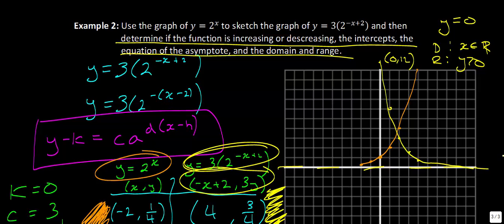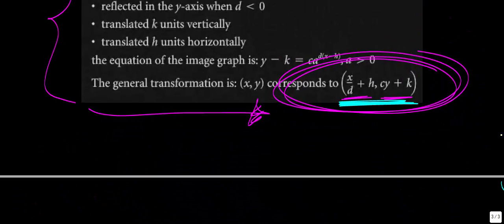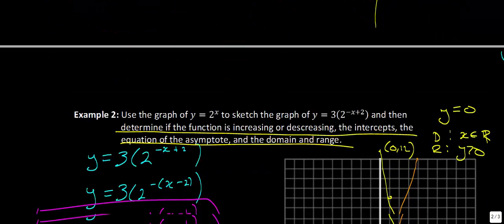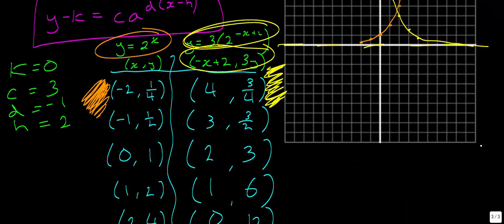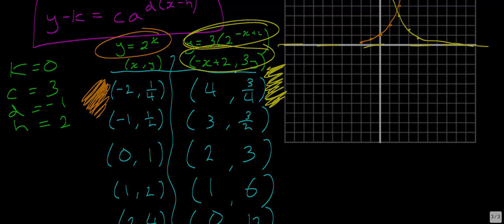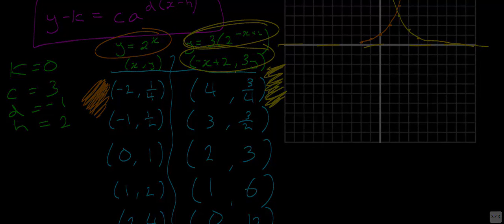The key thing to remember is that if you have a strong grasp of this ordered pair transformation and how to find the corresponding coordinates, you should be good to go when setting up your table of values — make the original table, then make the new one. That concludes this lesson on graphing exponential functions and determining their characteristics. Thank you very much, I'll see you next time.